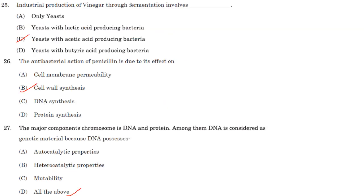Industrial production of vinegar through fermentation involves yeast with acetic acid-producing bacteria. Answer is option C.